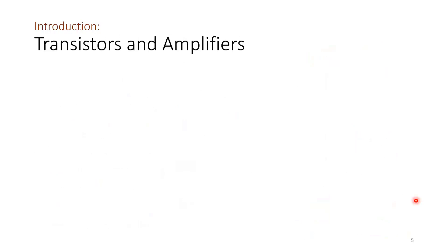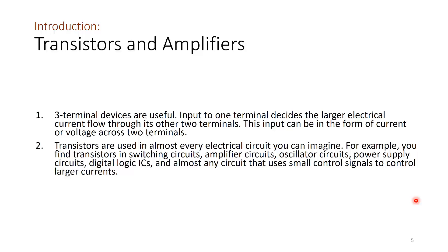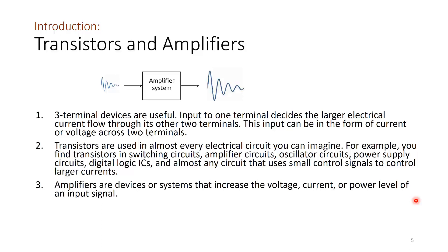Three-terminal devices are more useful than two-terminal devices because an input to one terminal decides the larger electrical current flow through the other 2 terminals. Transistors are used in almost every electrical circuit imaginable — including switching circuits, amplifier circuits, oscillator circuits, power supply circuits, digital logic ICs — almost any circuit that uses small control signals to control larger currents.